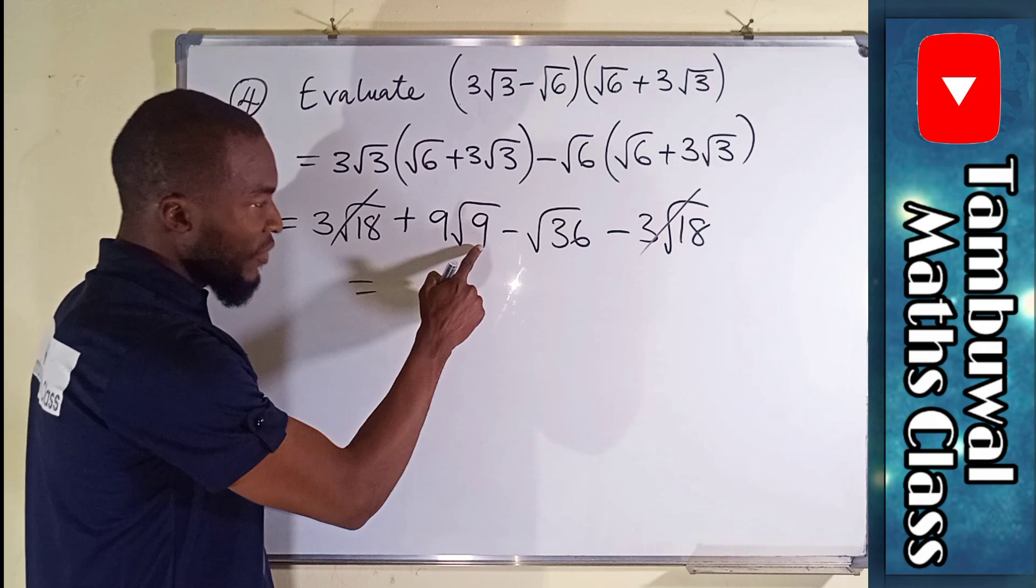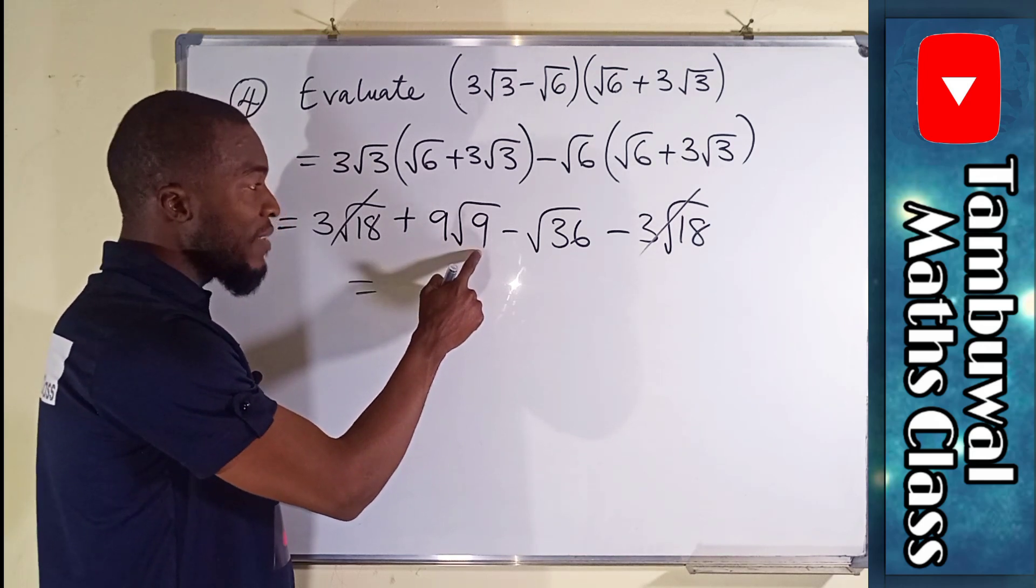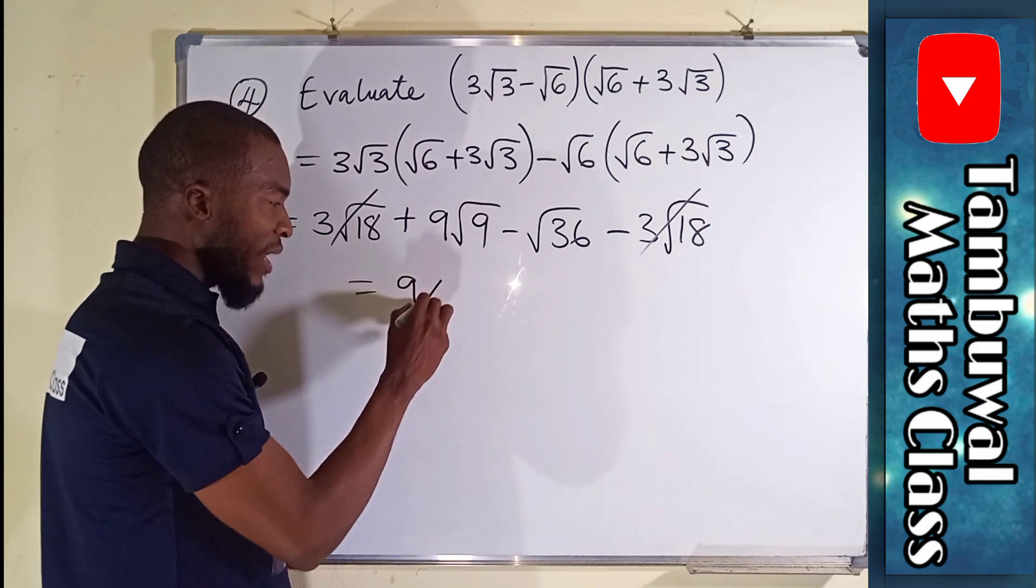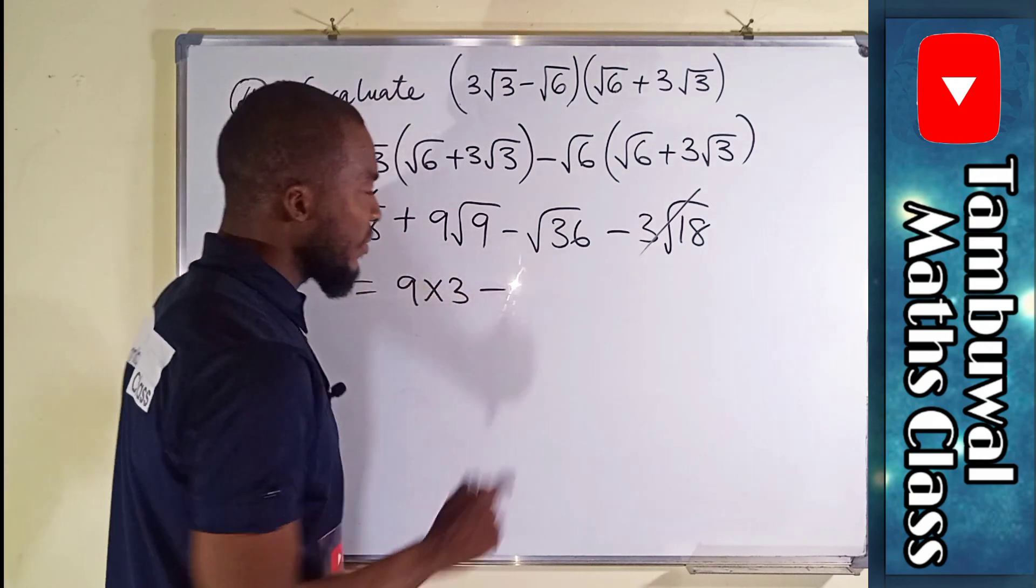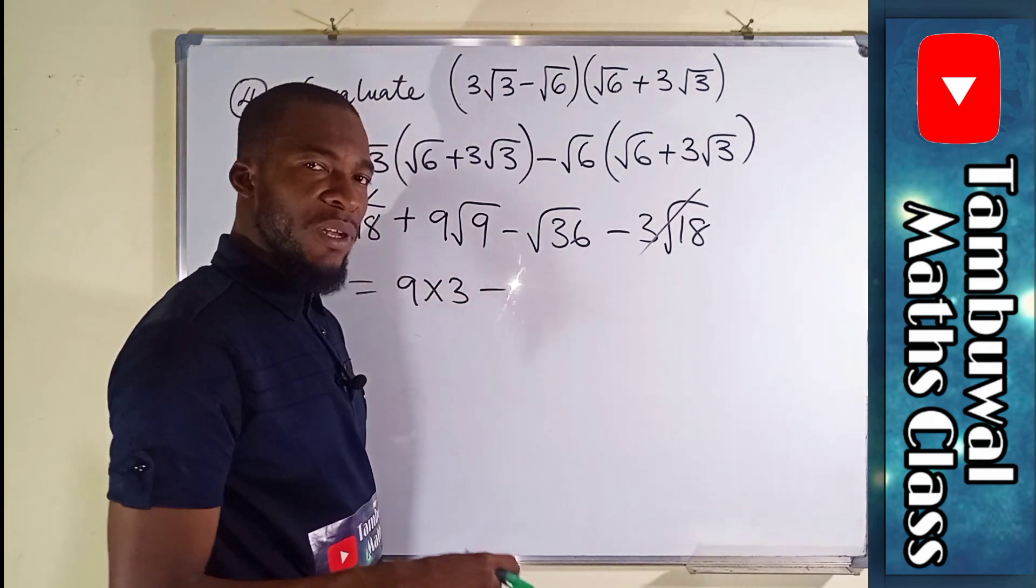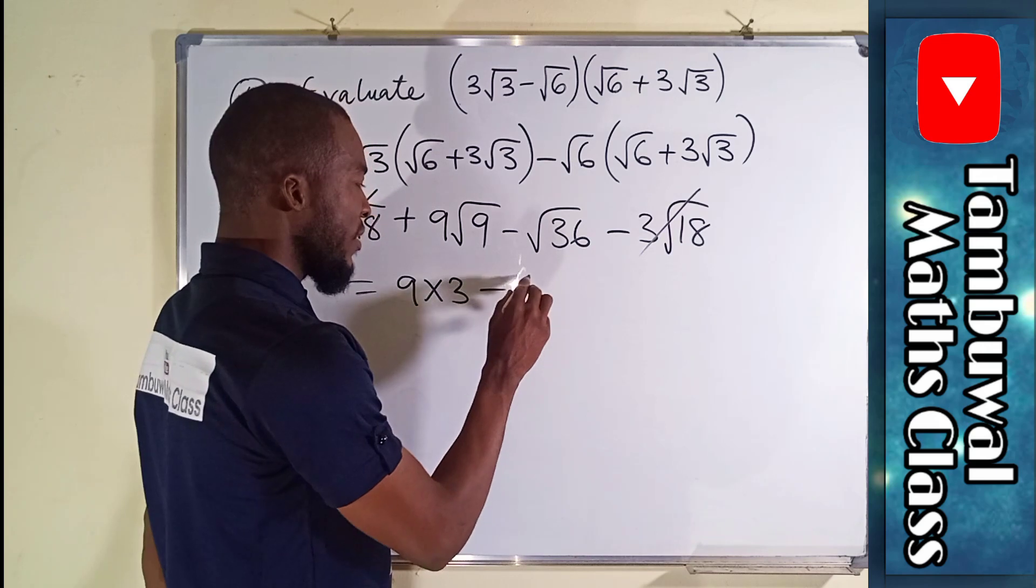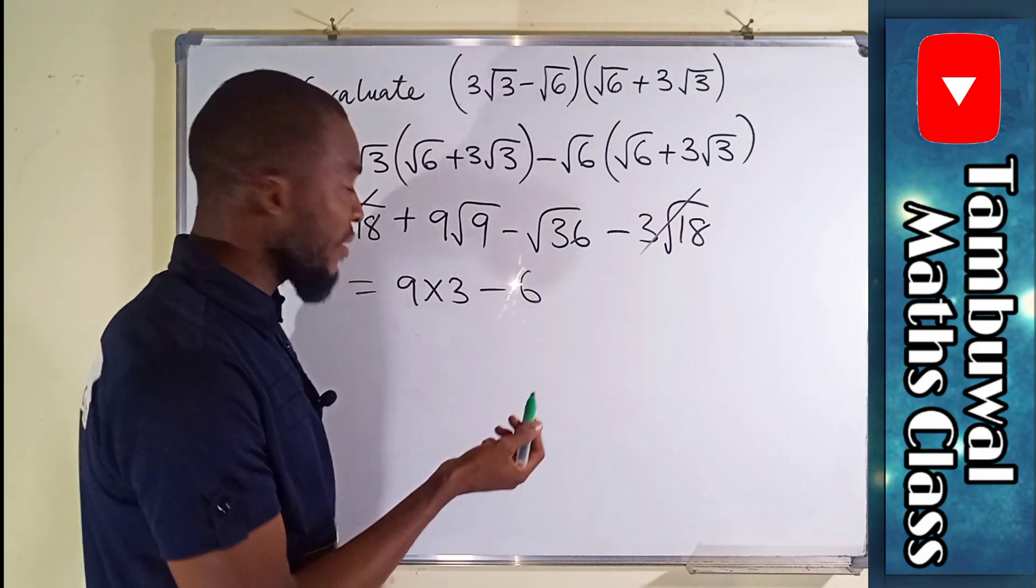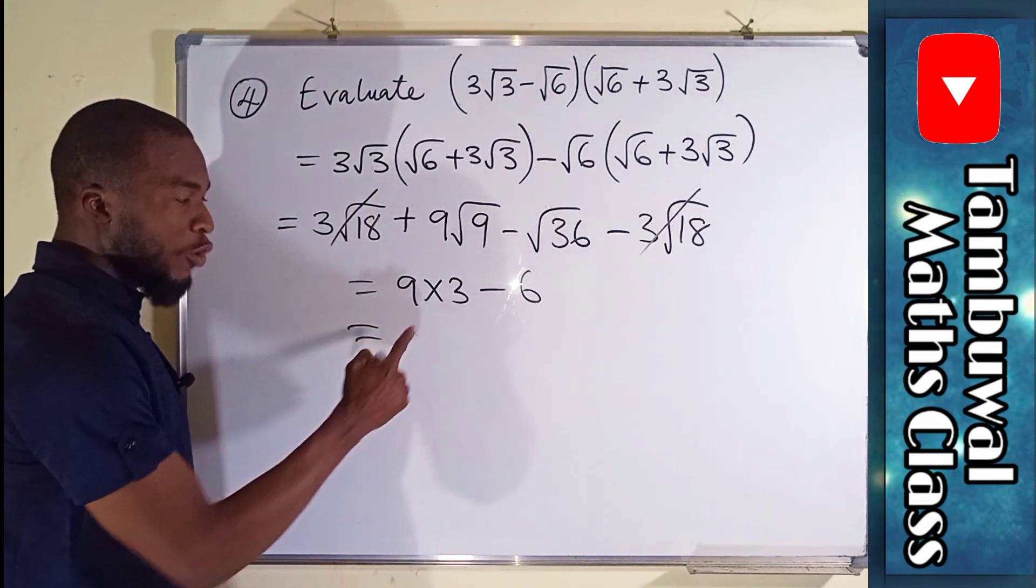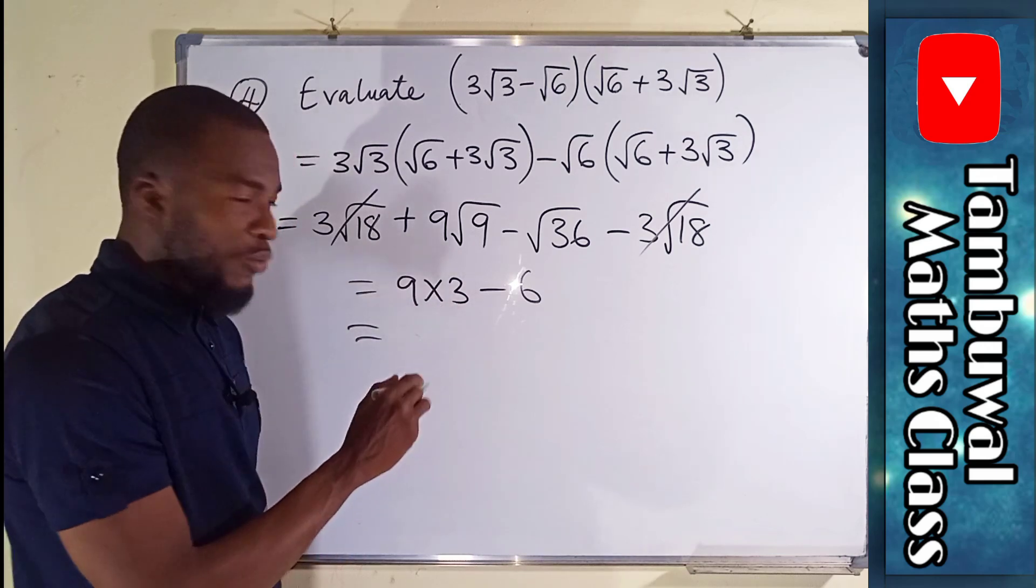What we have is √9, and the square root of 9 is 3, so we have 9 times 3 here. Minus √36, and the square root of 36 is 6. This equals 9 times 3 which is 27.